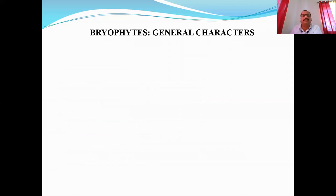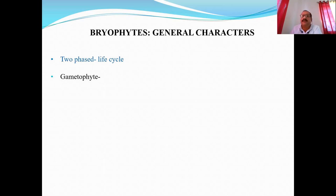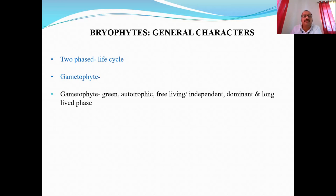Now we will move to the general characters of bryophyta. In the life cycle of bryophyta, there are two phases: the gametophyte and the sporophyte. The gametophyte is the long-living, independent, dominant phase. It is green, autotrophic, free-living, and long-lived. Because it is green, it is autotrophic and can prepare its own food, making it independent and dominant — not dependent on any other phase in the life cycle.